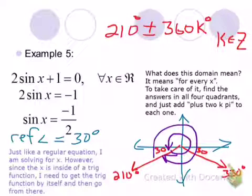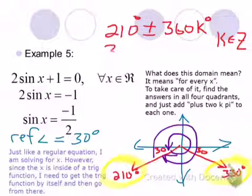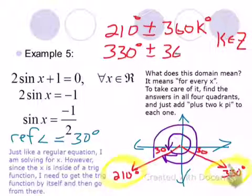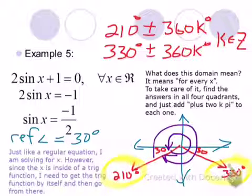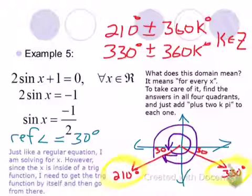We still have the 330-degree angle to deal with. So the other set of answers is 330 degrees plus or minus 360K degrees. If we had decided to do radians, then we would have the two angles plus 2Kπ, because 360 degrees equals 2π. K is an element of the integers — the positive and negative whole numbers.